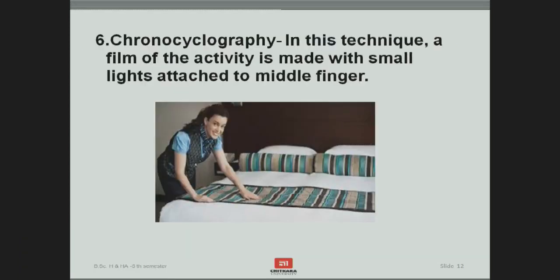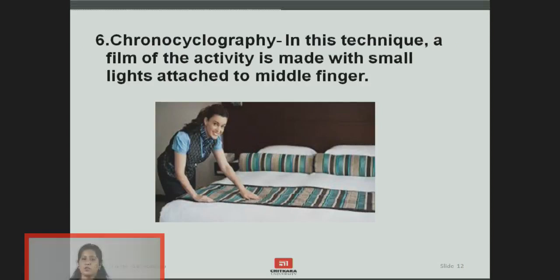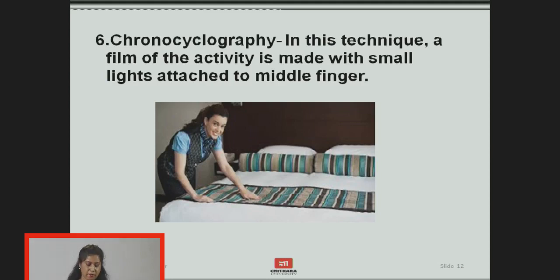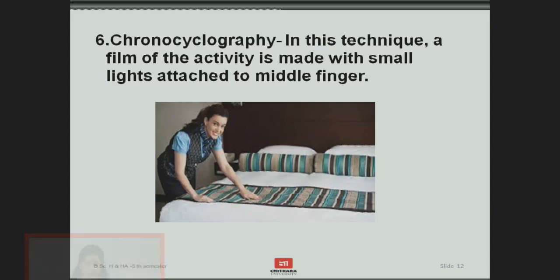The sixth technique is chronocyclography. In this technique, a film of the activity is made with small lights attached to the middle finger. The pattern of movement is filmed and finally analyzed to find out which movements are unnecessary or non-rhythmic, so they can be eliminated and improved upon.